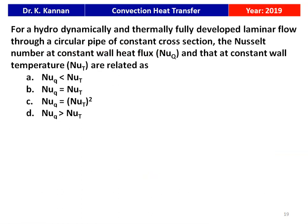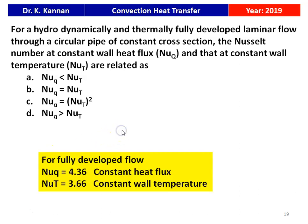Next question from the 2019 paper: for a hydrodynamically and thermally fully developed laminar flow through a circular pipe of constant cross section, the Nusselt number at constant wall heat flux (Nu_q) and at constant wall temperature (Nu_T) are related as — Nu_q < Nu_T, Nu_q = Nu_T, Nu_q = Nu_T², or Nu_q > Nu_T? For fully developed flow, Nu for constant heat flux is 4.36 and Nu for constant wall temperature is 3.66. Therefore Nu_q is greater than Nu_T. These constants apply only for fully developed laminar flow through a circular pipe.